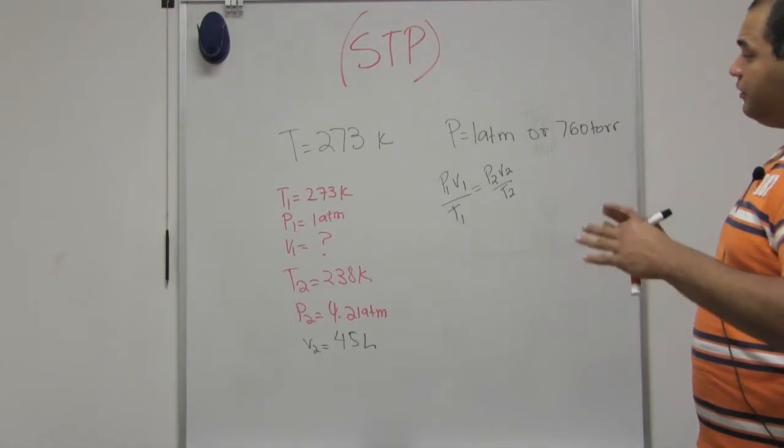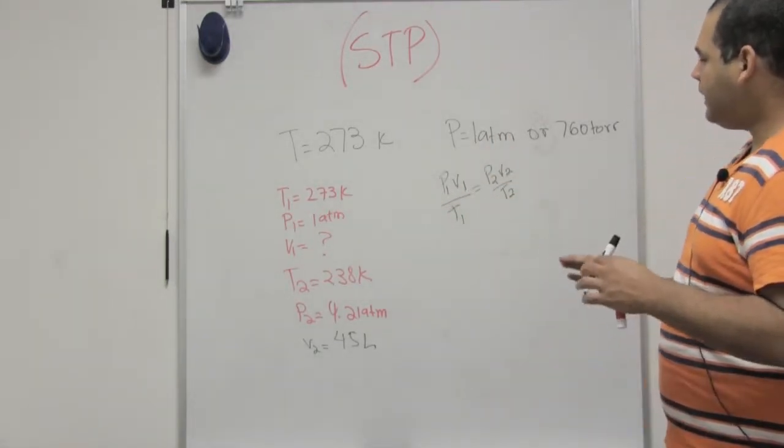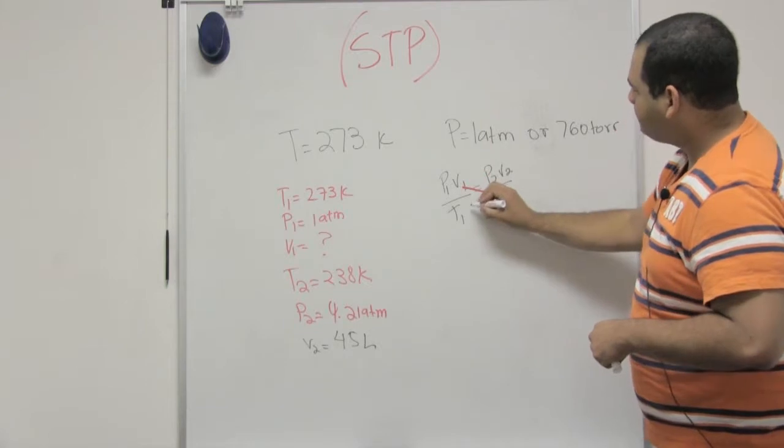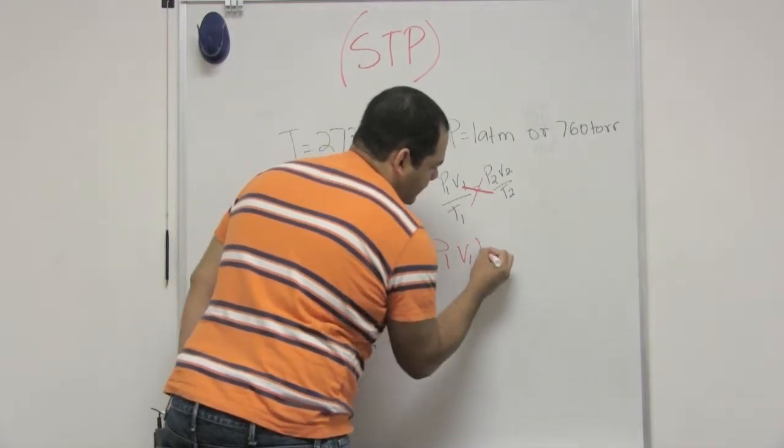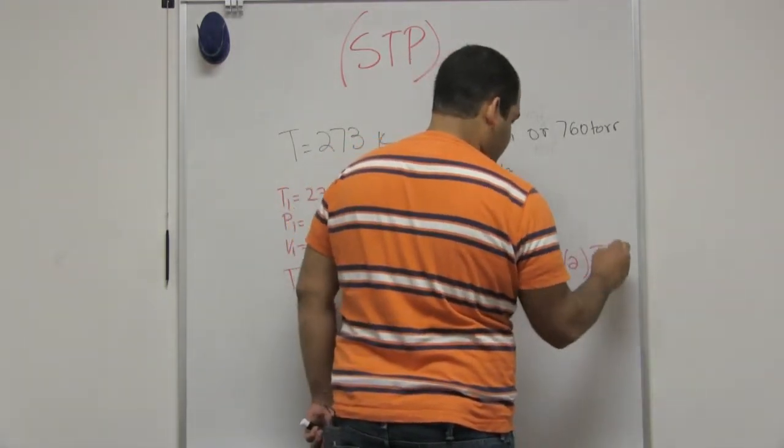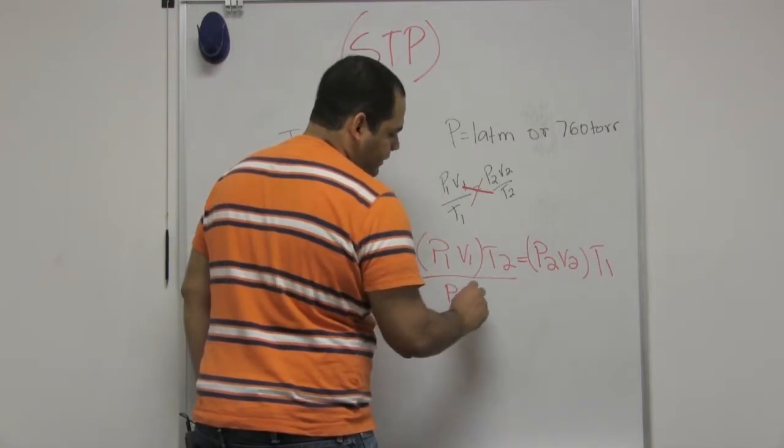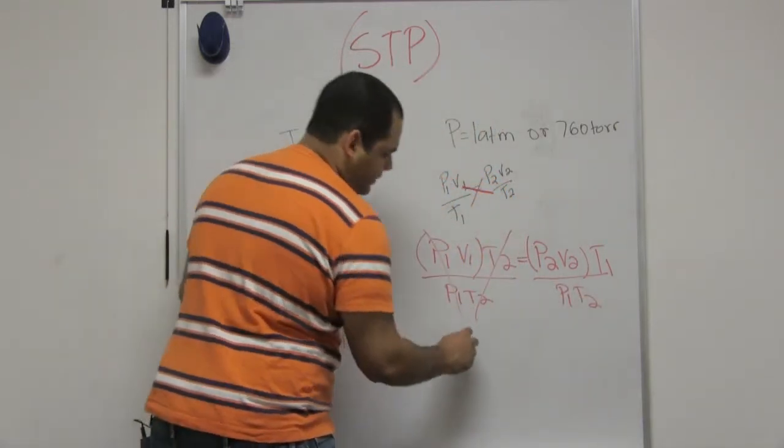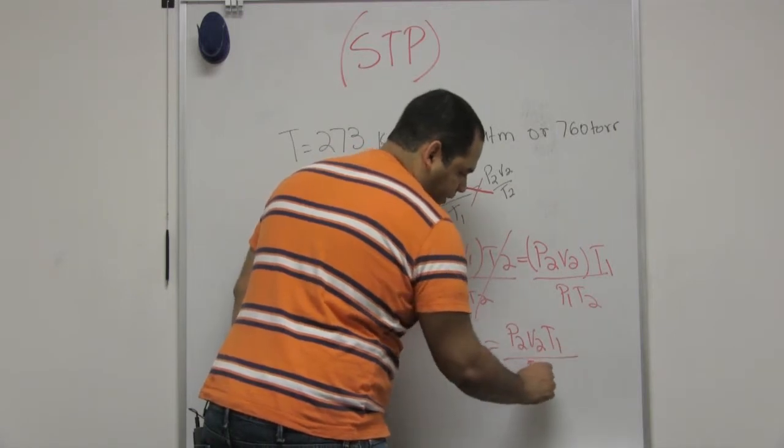I'm trying to solve my equation for V1. So first of all I need to rearrange my formula so V1 could be by itself. The easiest way to do that is first cross multiplying. So here I have P1 V1 times T2 equals P2 V2 times T1. Now I want V1 by itself so I divide both sides by P1 T2, so T2 cancels out, P1 cancels out. So V1 would be equal to P2 V2 T1 divided by P1 T2.